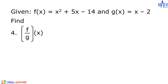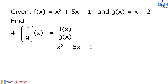Last number: quantity f over g of x. It is equal to f of x over g of x. f of x is x squared plus 5x minus 14, all over g of x which is x minus 2.